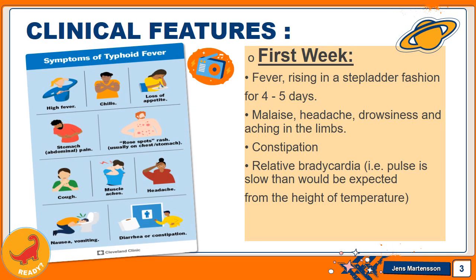In the first week after infection, the patient may present with fever which is high grade, that is 40 to 41 degrees Celsius, and it rises in a step-ladder fashion for 4 to 5 days. Other symptoms may include malaise, headache, drowsiness, and pain in the limbs. Constipation may also occur due to swelling of lymphoid tissue around the ileocecal junction. Relative bradycardia may also be present which is due to the fever.